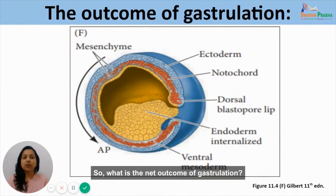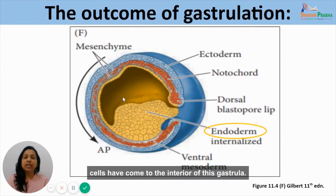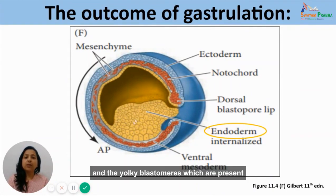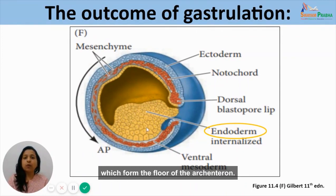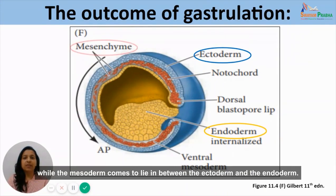The net outcome of gastrulation: the endoderm comes to lie in the interior of the gastrula, derived from the superficial IMZ cells forming the roof of the archenteron and yolky blastomeres forming the floor. The ectoderm develops as a layer on the entire outside surface of the embryo, while the mesoderm comes to lie in between the ectoderm and endoderm.